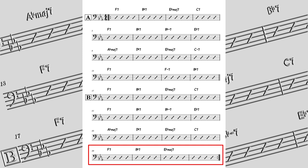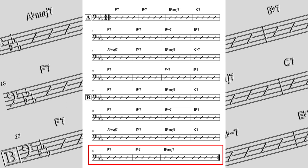In the second ending, we have the same modified 2-5-1 progression from the start of the form, with F7 substituting for F-7.